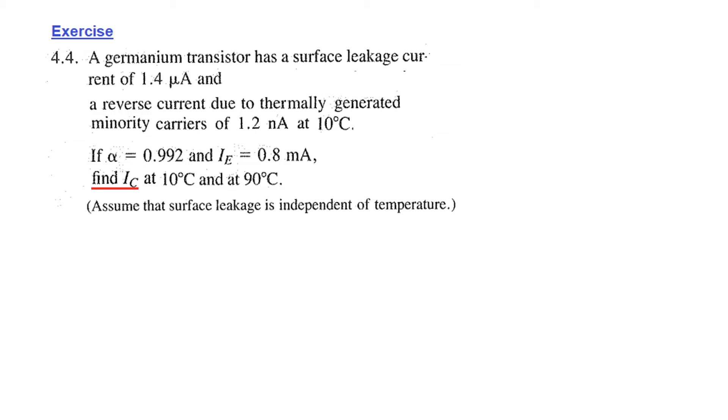Now we'll solve the assignment question. A Germanium transistor has a surface leakage current of 1.4 microampere and a reverse current due to thermally generated minority carriers of 1.2 nanoampere at 10°C. If alpha is 0.992 and emitter current is 0.8 milliampere, find the collector current IC at 10°C and at 90°C. Assume that the surface leakage is independent of temperature.